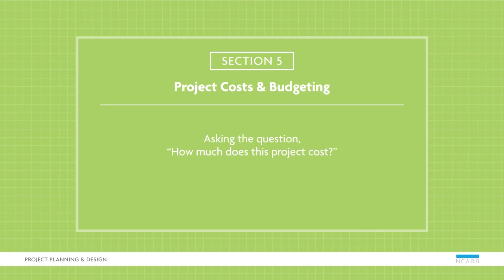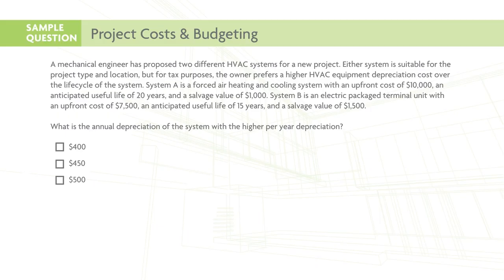Let's look at a sample question. A mechanical engineer has proposed two different HVAC systems for a new project. Either system is suitable for the project type and location, but for tax purposes the owner prefers a higher HVAC equipment depreciation cost over the life cycle of the system. System A is a forced air heating and cooling system with an upfront cost of $10,000, an anticipated useful life of 20 years, and a salvage value of $1,000. System B is an electric package terminal unit with an upfront cost of $7,500, an anticipated useful life of 15 years, and a salvage value of $1,500.